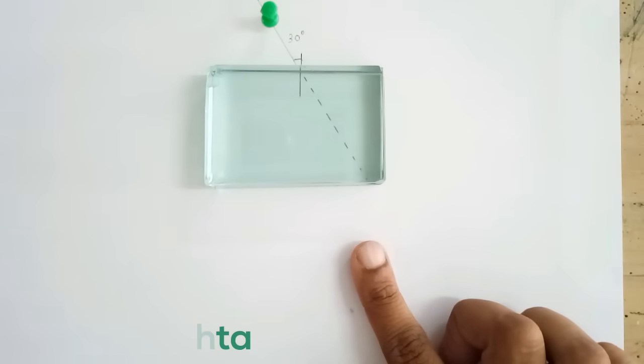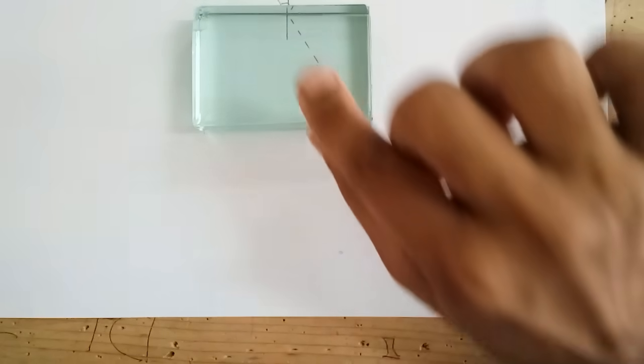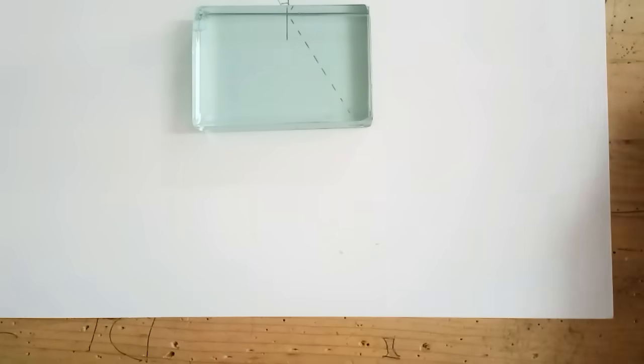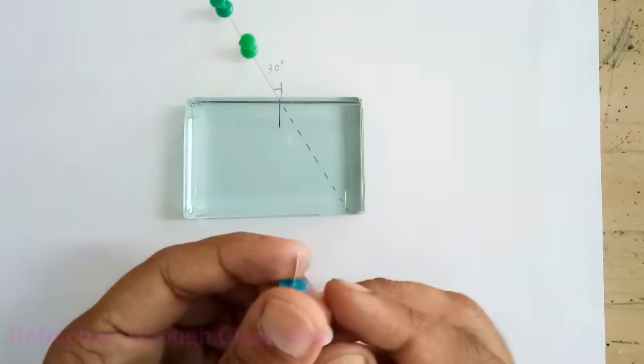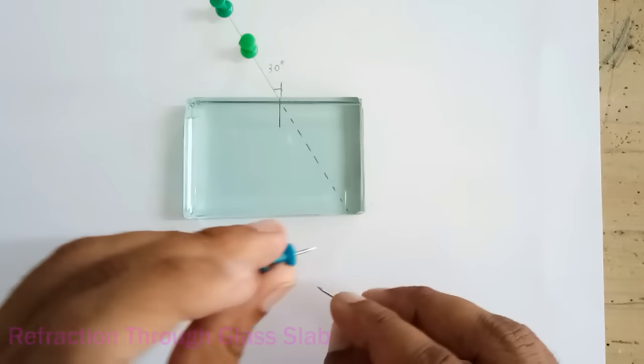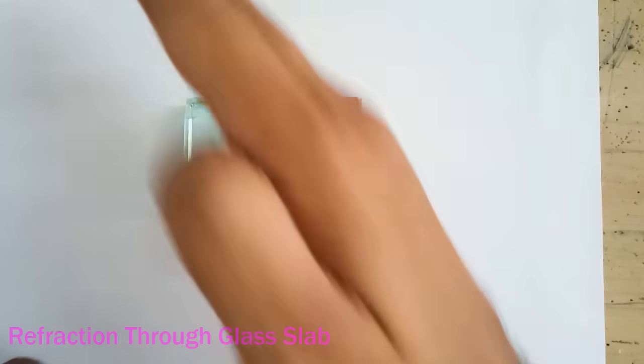So by keeping one eye closed, I am going to keep my eye over here and observe these two softboard pins from this side and I will keep another two softboard pins here in such a way that all four appear to be in straight line.